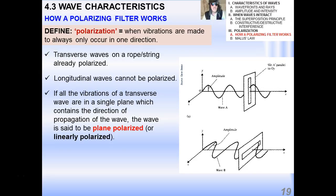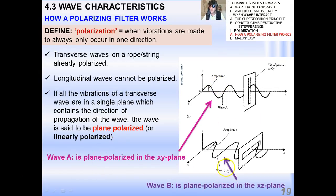These waves are what we call polarized because they occur only in one direction. You cannot polarize longitudinal waves. The term only really makes sense with transverse waves. If all the vibrations of a transverse wave are in a single plane which contains the direction of propagation of the wave, the wave is said to be plane polarized. That's the physics term that you need to know. Sometimes you hear it linearly polarized, but plane polarized is much more common. You can see that wave A is plane polarized in the x-y plane, and wave B is plane polarized in the x-z plane.